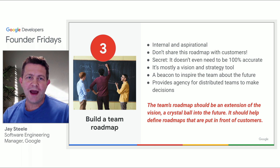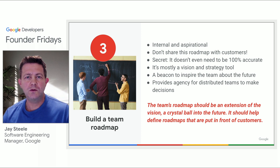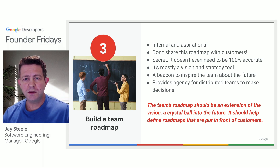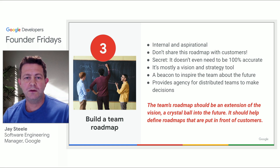Number three: build a team roadmap. This is an internal roadmap, and the number one goal is to be aspirational and ensure everyone on the team is pointed in the right direction. This is not a roadmap that you share with customers — it's only a planning tool, and it doesn't even have to be 100% accurate. This is a tool to inspire the team about the future; it's like a beacon or a lighthouse. You don't want a team that is completely oblivious to what the next year will bring. In addition, this provides agency to distributed teams to make decisions, and helps alleviate confusion or ambiguity. You often only have a couple of hours a day where you're able to directly communicate, so making sure they can make decisions quickly is absolutely important.